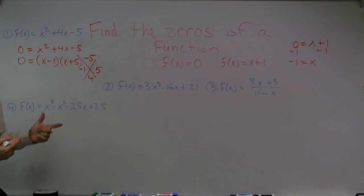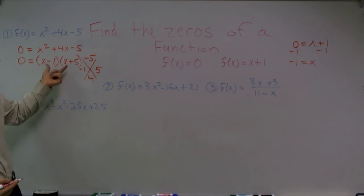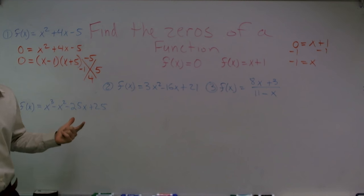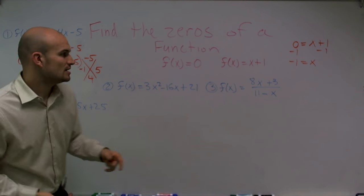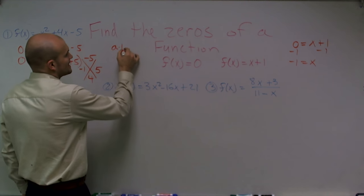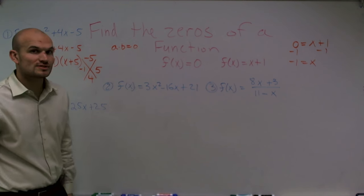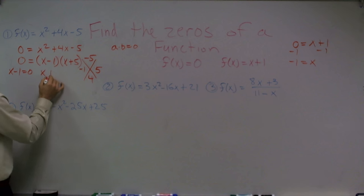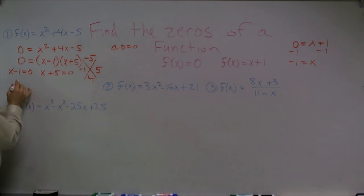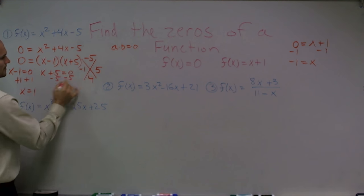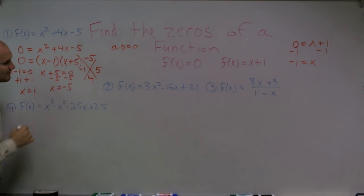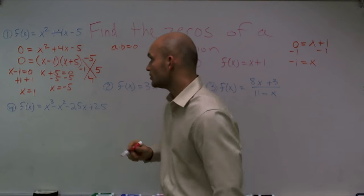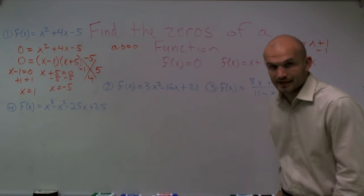Whenever one factor times another factor equals 0, one of them has to equal 0 — just like if a times b equals 0, one of them has to be 0. So I set both equal to 0: x minus 1 equals 0, and x plus 5 equals 0. Solving for x, I get x equals 1 and x equals negative 5. Therefore, the zeros for this equation are positive 1 and negative 5.